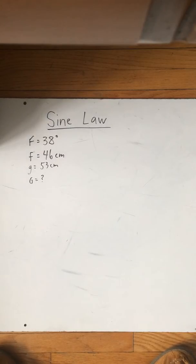Alright, so this is sine law. Now for this question, they've given us angle F, which is 38 degrees, side F, which is 46 centimeters, side G, which is 53 centimeters, and they've asked us to find the angle G.